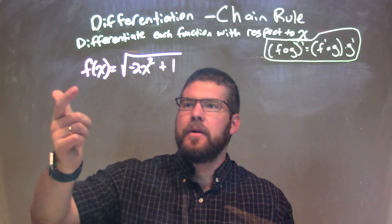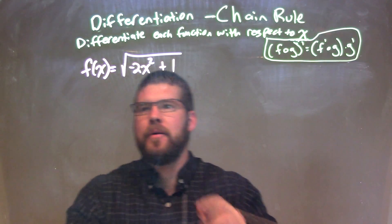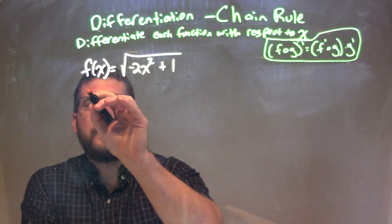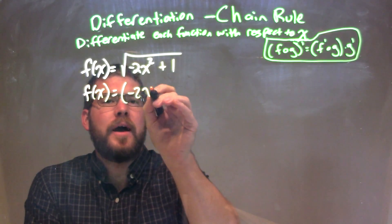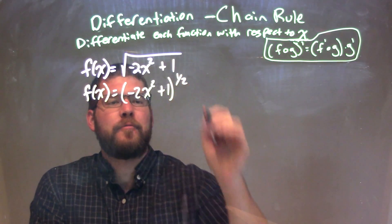I'm going to rewrite this. Instead of having a square root, I'm going to write it to the 1 half power. I prefer seeing fractions as exponents. So f of x is equal to negative 2x squared plus 1 all to the 1 half power.